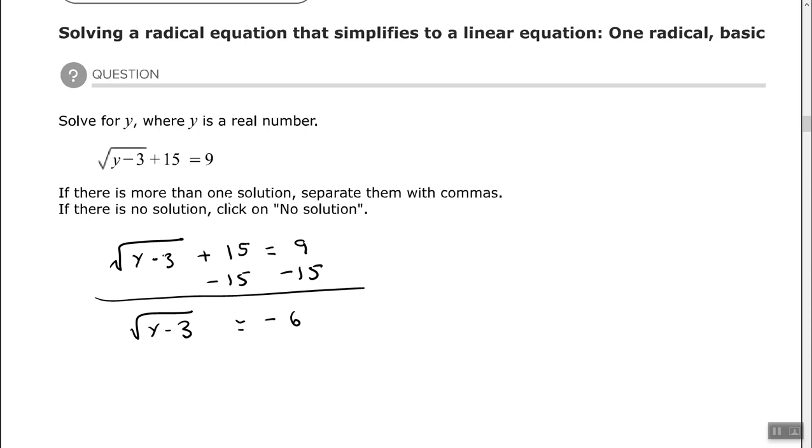All right, so right here, once I isolate that radical, and it's telling me that I have the square root of some number, and it's saying it's equal to negative 6, equal to a negative number, I know that it's not possible. But I have to isolate the radical before I can make that determination. So since I cannot take the square root of some number and get the result of a negative number, then I know that this is no solution. The square root of any number that we take must be greater than or equal to 0. So it has to be 0 or positive. So that's no solution.